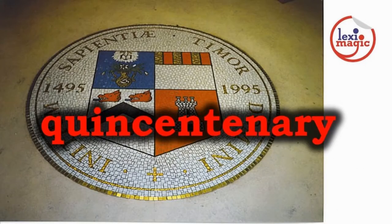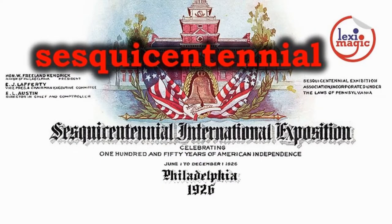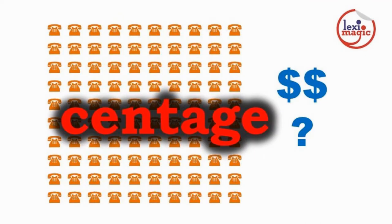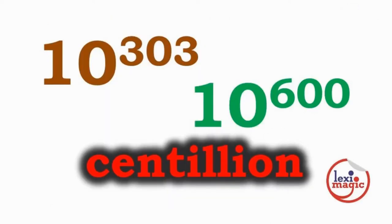Quingentenary is the 500th anniversary of something. Sesquicentennial relates to the 150th anniversary of an event. Centage is the price per hundred of an item. Centillion is a number equal to one followed by 600 zeros in Britain, and 303 zeros in the US.